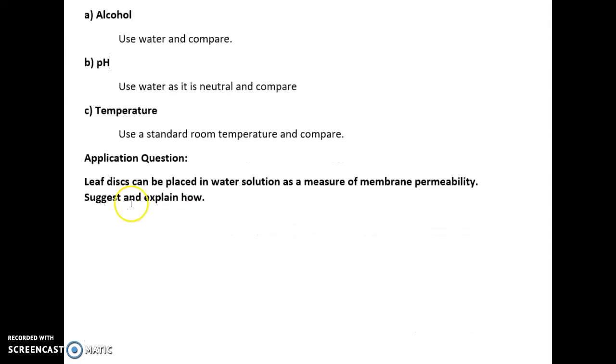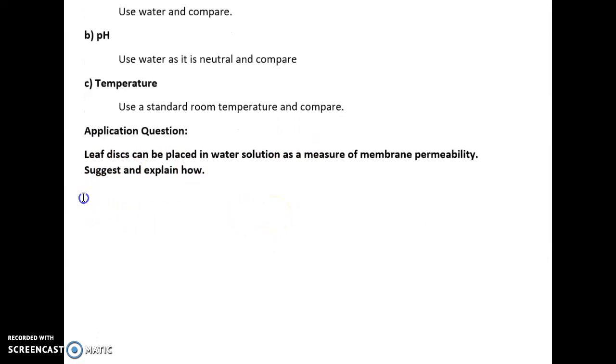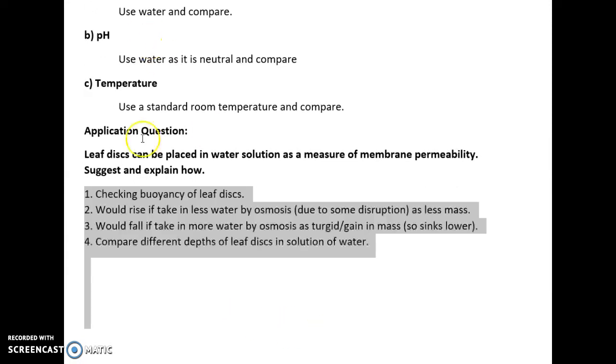An application question I could ask is: Leaf discs can be placed in water solution as a measure of membrane permeability. Suggest and explain how. This question relies on the idea of buoyancy. You can check the buoyancy of leaf discs, and they would rise if they take in less water by osmosis because their mass would be less, so they'd be less dense. However, they will fall if they are more dense because water will move in by osmosis. Then we could compare the different depths of leaf discs in the solution of water.